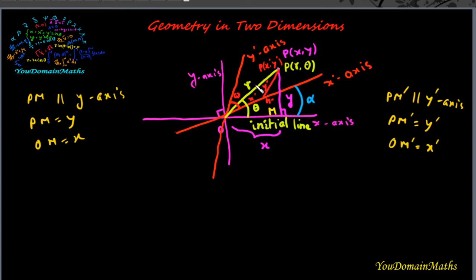For the oblique axes, x' and y' are the two axes, where omega (ω) is the angle between the two oblique axes, and alpha (α) is the angle between the x-axis and the x' axis.